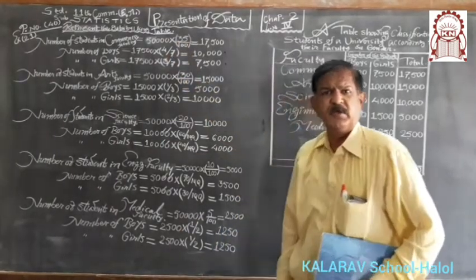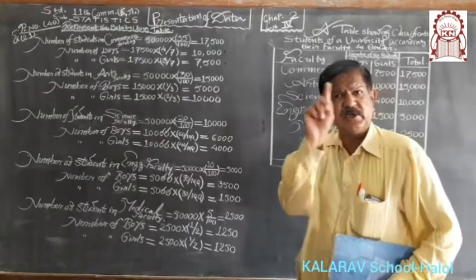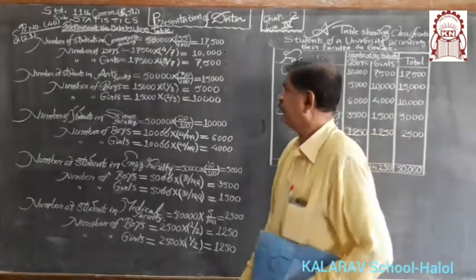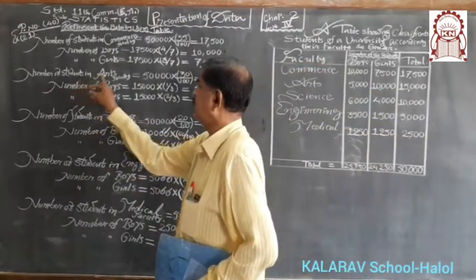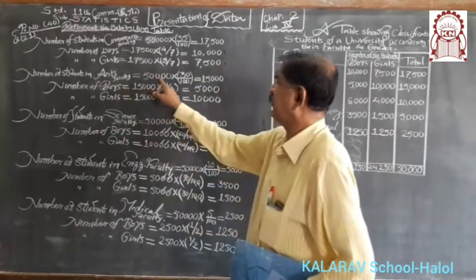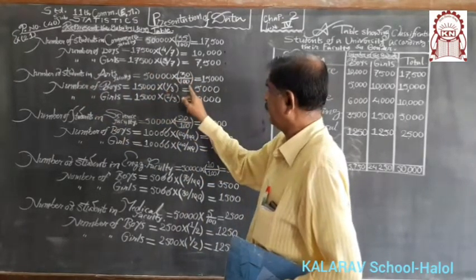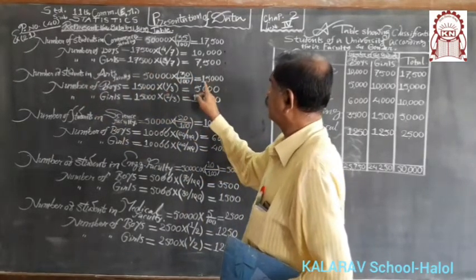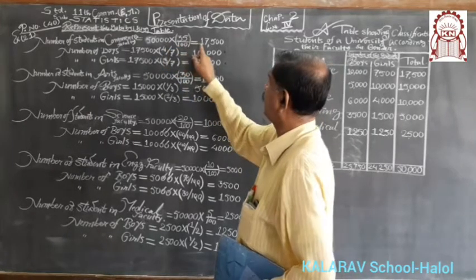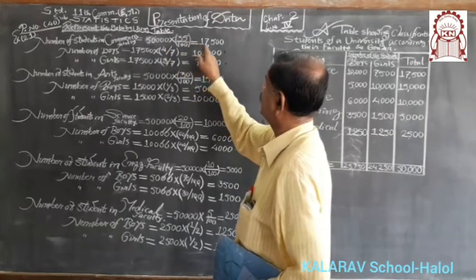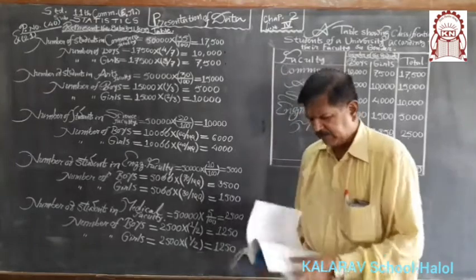In the arts faculty, there are 30%. The number of students in arts equals 50,000 multiplied by 30 over 100, giving a total of 15,000. Commerce faculty has 17,500 students.